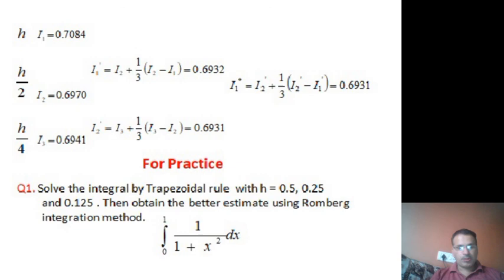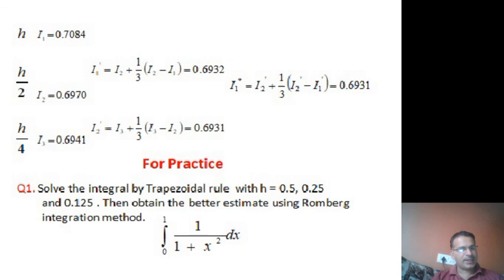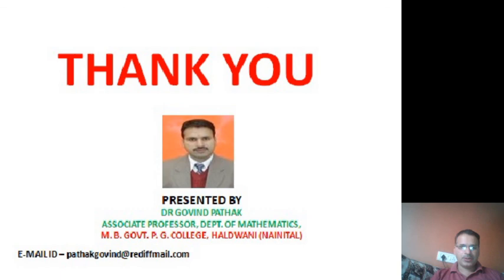The approximate answer from Romberg integration for ∫0 to 1 of 1/(1+x) dx is 0.6931. This is more accurate compared to the trapezoidal rule, which gave 0.7084 at h, then 0.6970 at h/2, and 0.6941 at h/4. Romberg integration gives us a better answer of 0.6931. A practice question is given: find a better estimate using Romberg integration method. Thank you — please like, subscribe, and write comments on Google Classroom or YouTube.